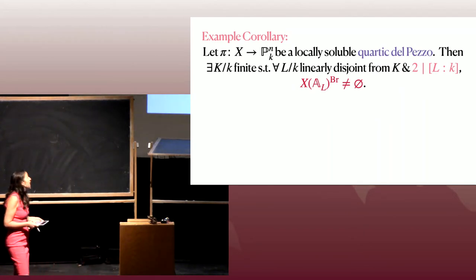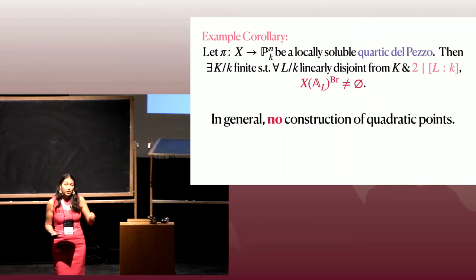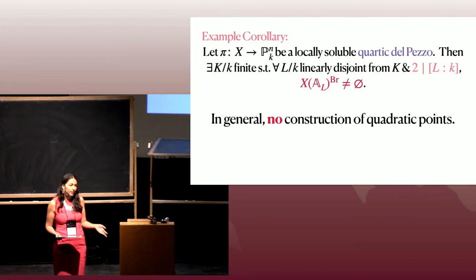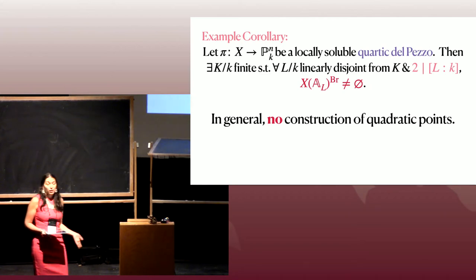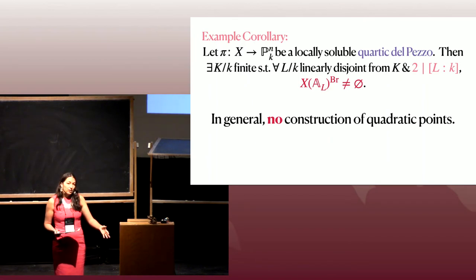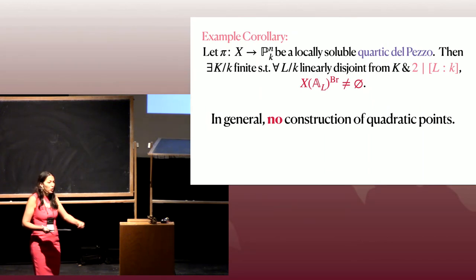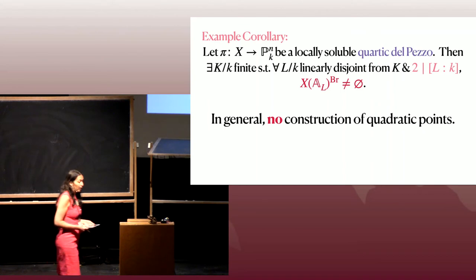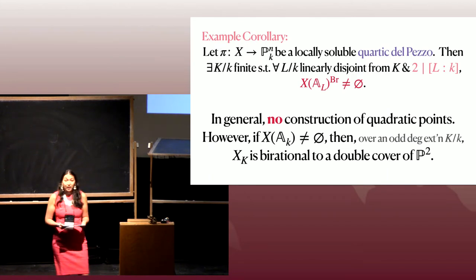Now the quartic del Pezzo surface case is a little different. Quartic del Pezzo surfaces are intersections of two quadrics in P^4. It's very easy to get degree-four points, but it's not obvious you should get degree-two points. In fact, over arbitrary fields you can write down quartic del Pezzo surfaces over fields of higher transcendence degree that have no points over any quadratic extension. So there's no easy geometric way to get quadratic points — this already tells us something more than we might expect.